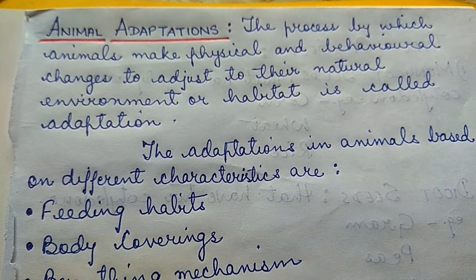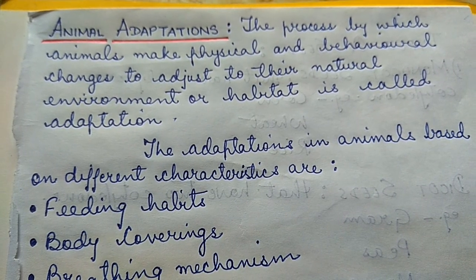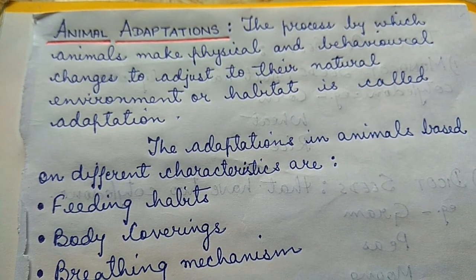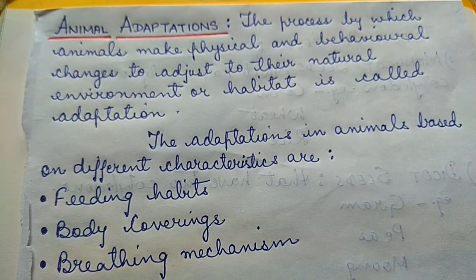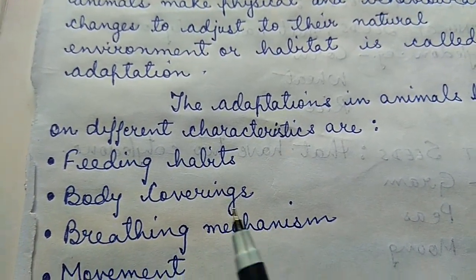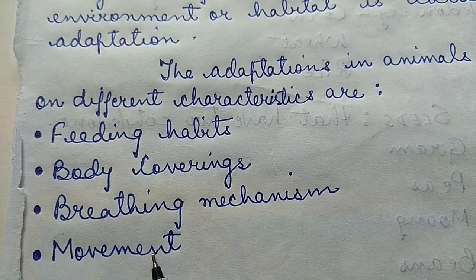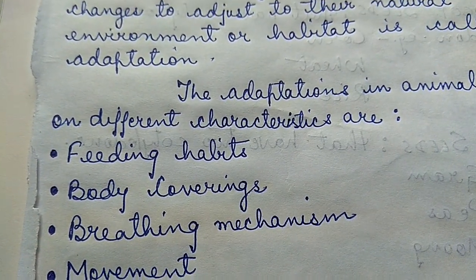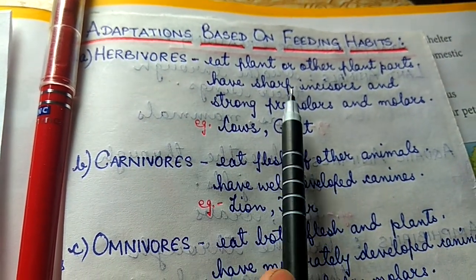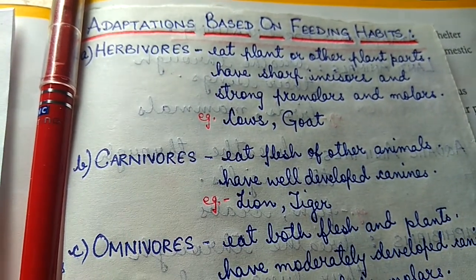Now let's start with animal adaptations. The process by which animals make physical and behavioral changes to adjust to their natural environment or habitat is called adaptations. The adaptations in animals are based on different characteristics such as feeding habits, body coverings, breathing mechanism, and movement. Now let's start with the feeding habits. Based on different feeding habits, animals are divided into herbivores, carnivores and omnivores.